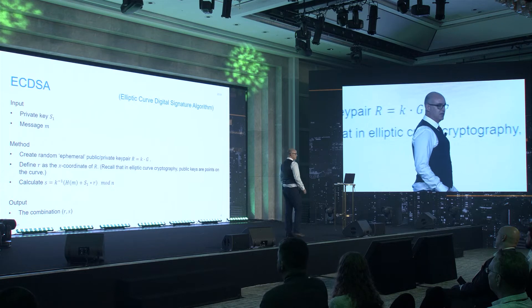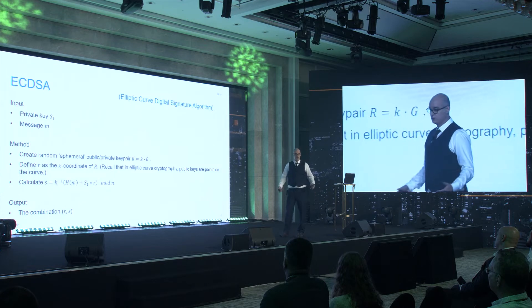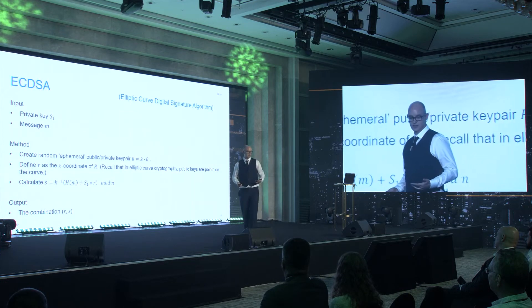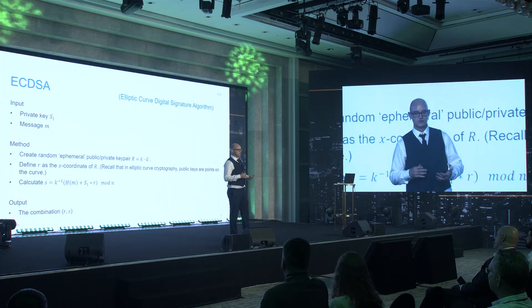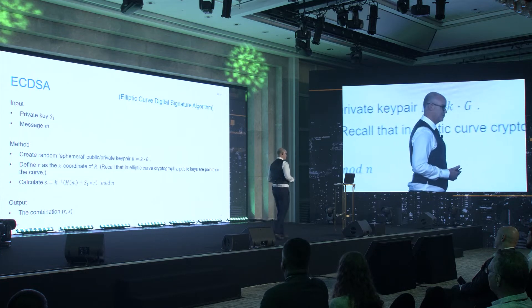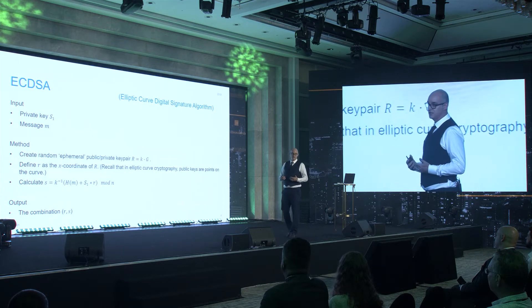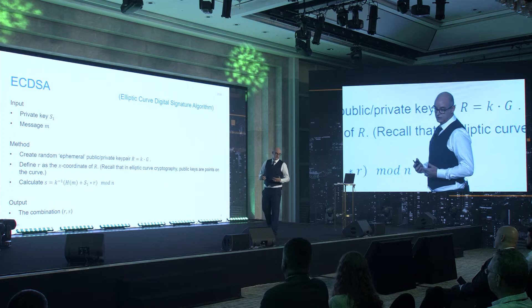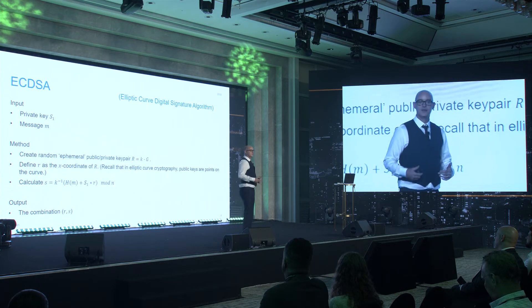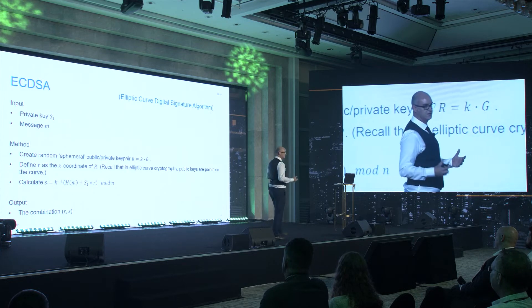The thing we're trying to replace, or emulate, is the standard EC-DSA signing algorithm. This is well known, well understood, widely used. It has two simple inputs: a private key and a message. The algorithm takes the private key and generates an ephemeral key — a one-time only use key, which is an EC point on the elliptic curve. We take the x-coordinate of that, call it little r, execute the formula in step three, and the output is a point with two components — an R and an S value. Together, that's an EC-DSA signature.